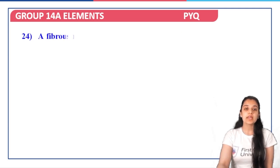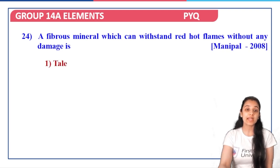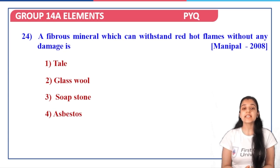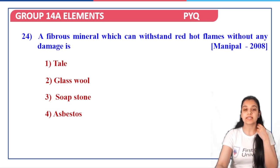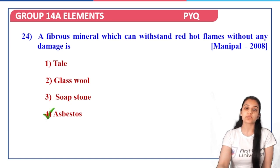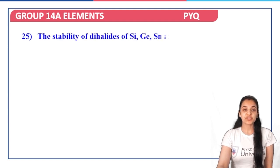Next: a fibrous mineral which can withstand red-hot flames without any damage — talc, glass wool, soapstone, or asbestos? Asbestos is a mineral of silica, and that is the correct answer — option four.